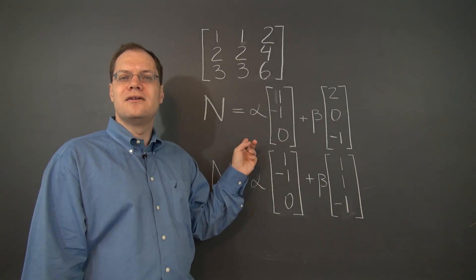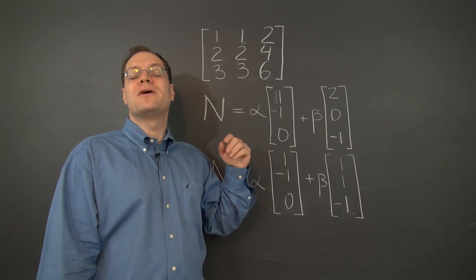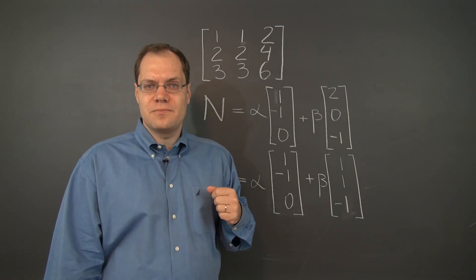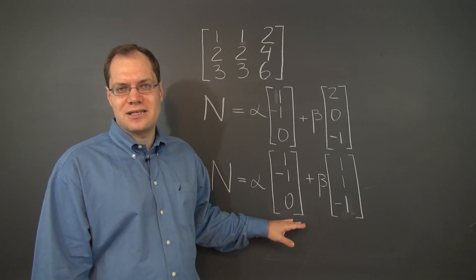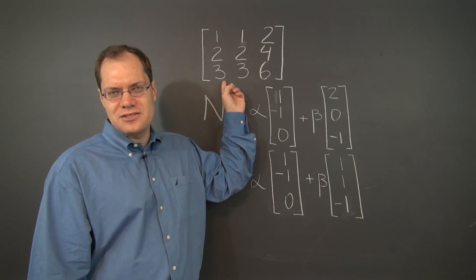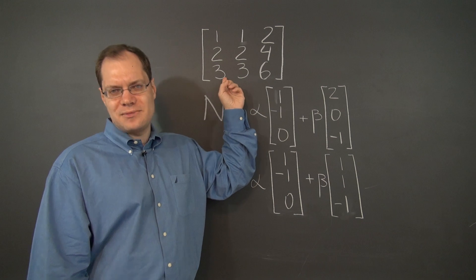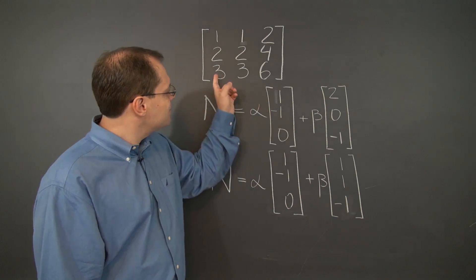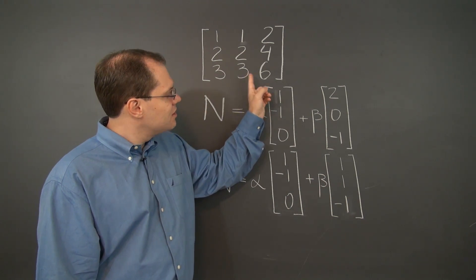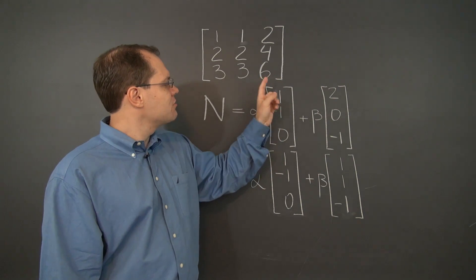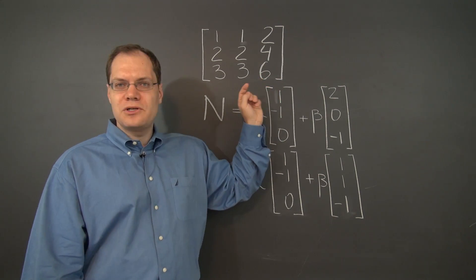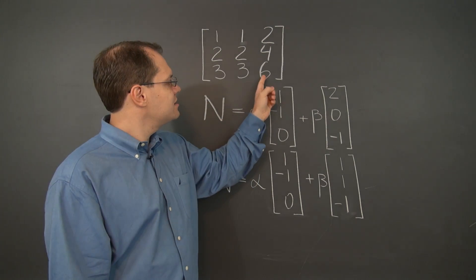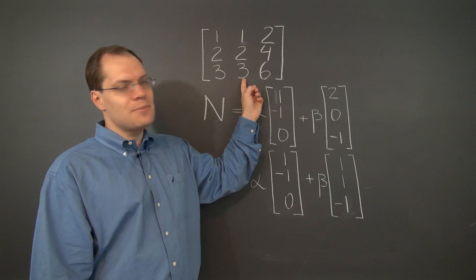So this is one legitimate expression representing the null space. But you may also notice a different relationship. The first element represents the same relationship — the second column is the same as the first — but this second element represents the fact that the sum of the first two columns equals the third column, which can be a replacement for the earlier relationship that the third column is twice the first.